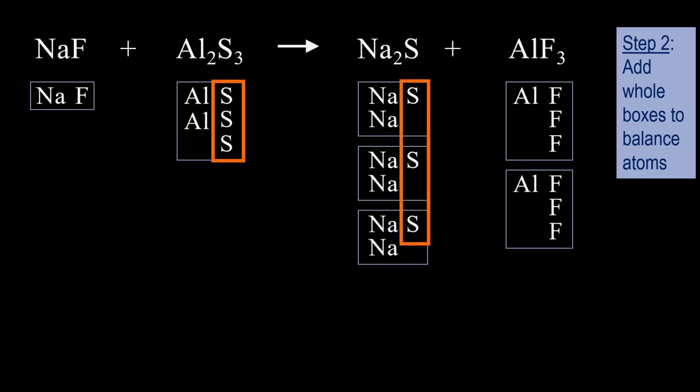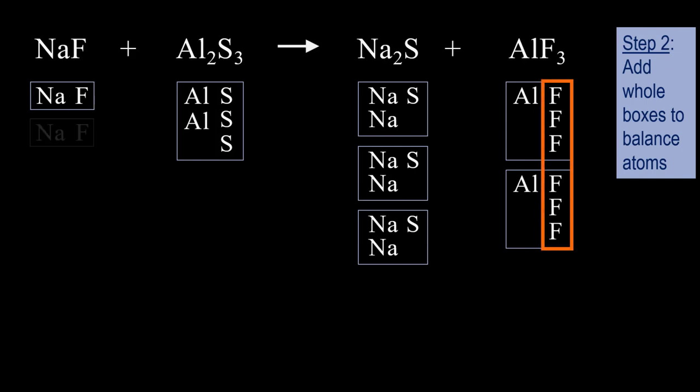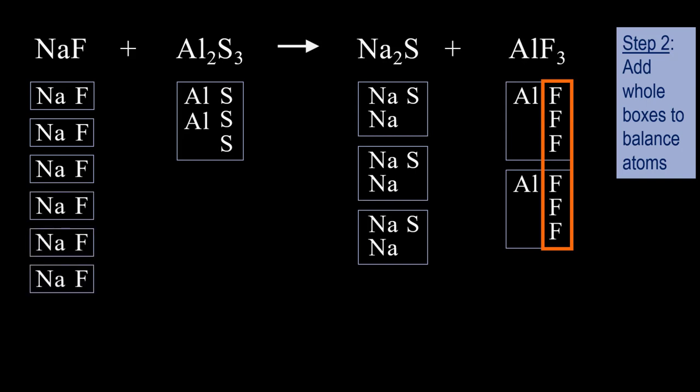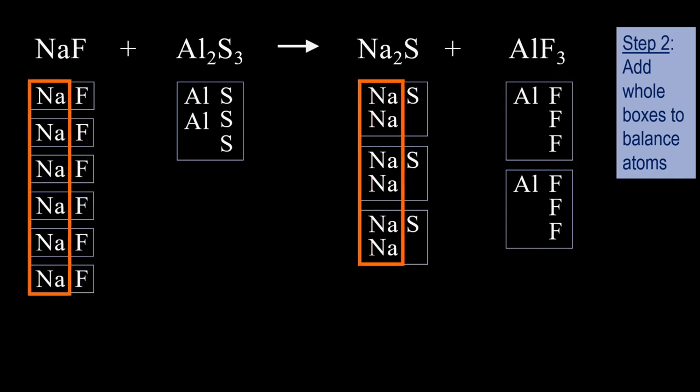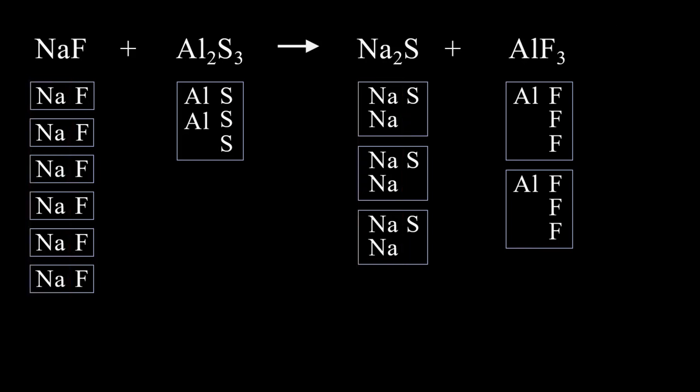There are now 3 S's on both sides. We can see there are 6 fluorines on the right and only 1 on the left. So we need to add 5 more boxes of NaF to get a total of 6 fluorines on the left to balance. I hope you can see by doing that we also have balanced the sodium, 6 on the left and 6 on the right. Once all the elements are balanced,